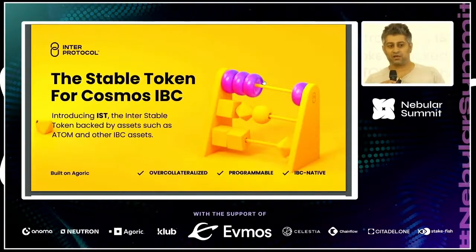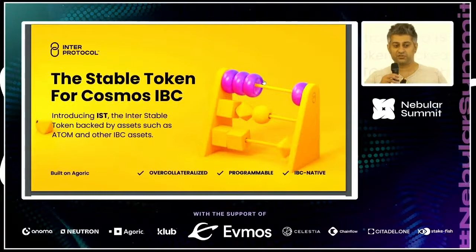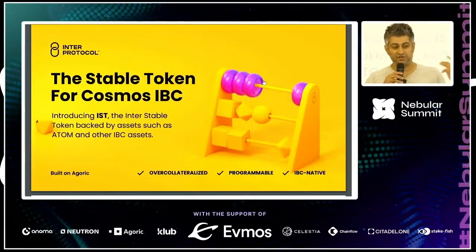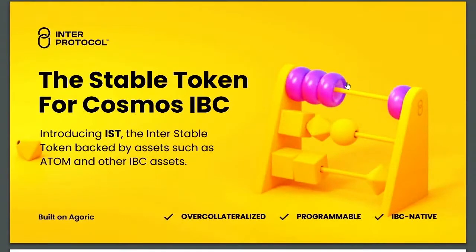Part of the plan for Agoric has been to launch with one family of smart contract applications before opening it up to the world. The kernel or operating system of the smart contract layer is 200,000 lines of JavaScript — a really sophisticated platform like a smart contract environment we haven't seen before. It builds on top of 40 years of work, and our first demo of this is the IST stable token.